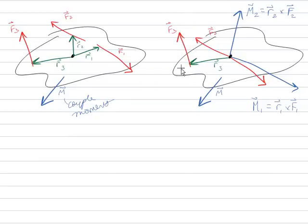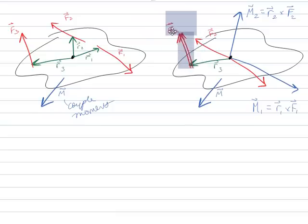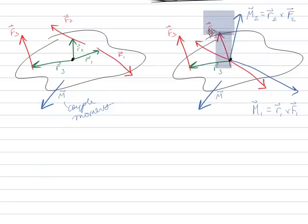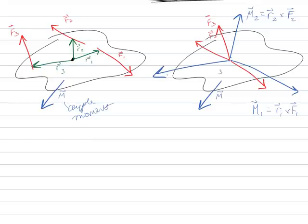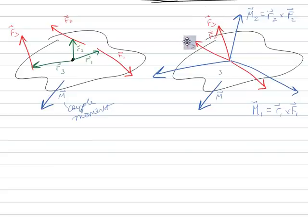Now I can take F3 and move him perpendicularly, then move him along his line of action, and get rid of the associated position vector — as long as I promise to replace him with M3, which is R3 cross F3.